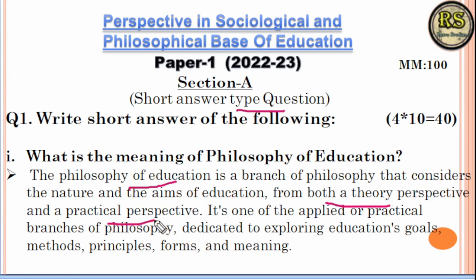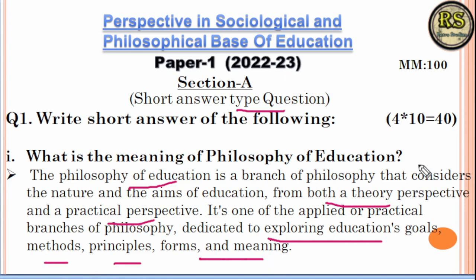These two things — when there is a problem theoretically or practically — this is the philosophy of education. This is the aim of education. The methods, principles, and many meanings are found within it.